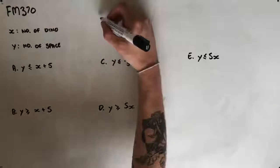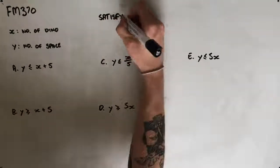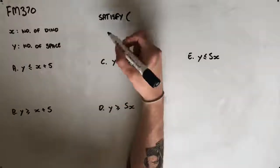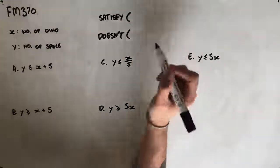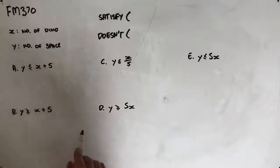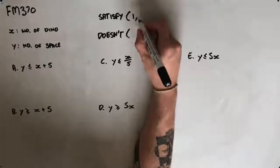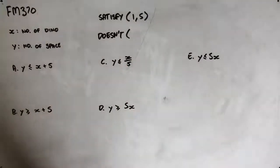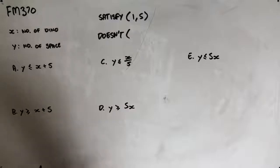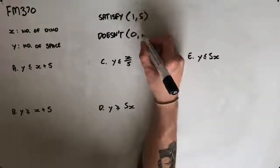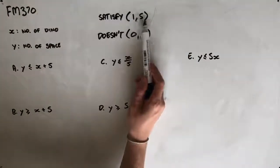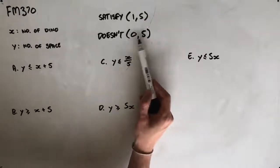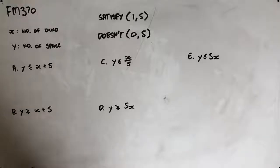What we're going to do is create two conditions for this question — one that satisfies the inequality and one that does not. Since there must be at least one dinosaur exhibition for every five space exhibitions, the condition that satisfies is one dinosaur for five space. And the condition that doesn't satisfy is zero dinosaur exhibitions for five space exhibitions. When we insert these into our inequality, the first should satisfy it and the second should not.